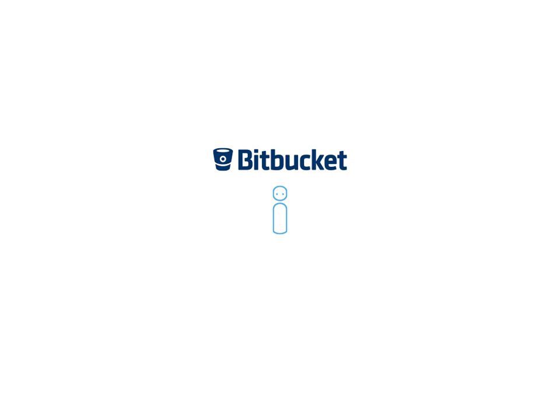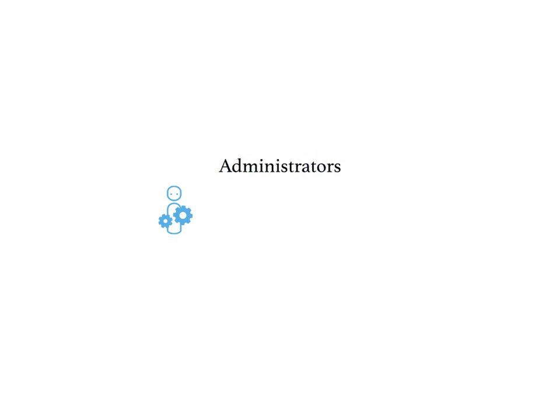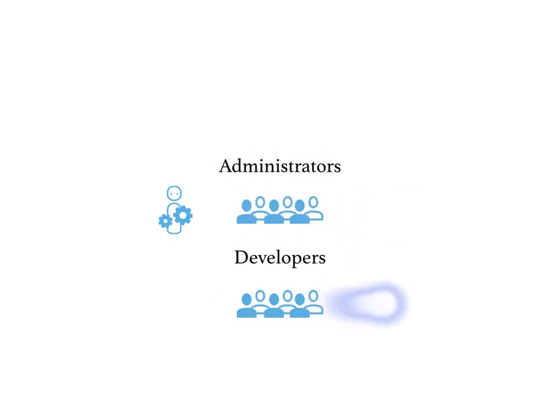How does all this work together? First, you need an individual Bitbucket account, and from that account you can create a team. Let's say we call it Teams in Space. When you create a team, you're automatically the owner and administrator. Bitbucket also creates two user groups for you: administrators and developers.